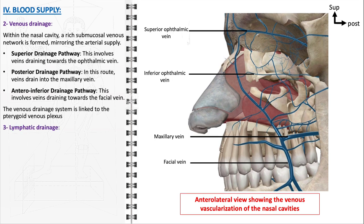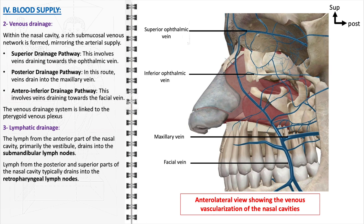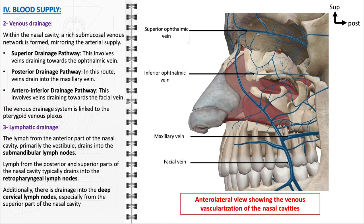The lymphatic drainage of the nasal cavity exhibits similar complexity. Lymph from the anterior part of the nasal cavity, particularly the vestibule area, primarily drains into the submandibular lymph nodes, located beneath the jaw. In contrast, lymph from the posterior and superior parts of the nasal cavity typically drains into the retropharyngeal lymph nodes, situated behind the pharynx. Additionally, the superior part of the nasal cavity also contributes to drainage into the deep cervical lymph nodes.